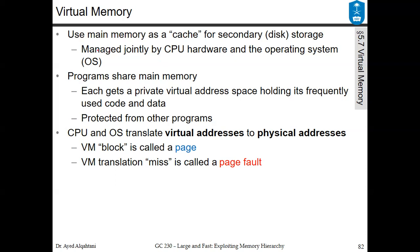Virtual memory is managed jointly by the hardware and the software — it's managed by the CPU hardware and the operating system as software. Programs share their main memory; each gets a private virtual address space holding its frequently used code and data. This is the first time we use the term virtual address. It is protected from other programs, so there is both sharing and protection.